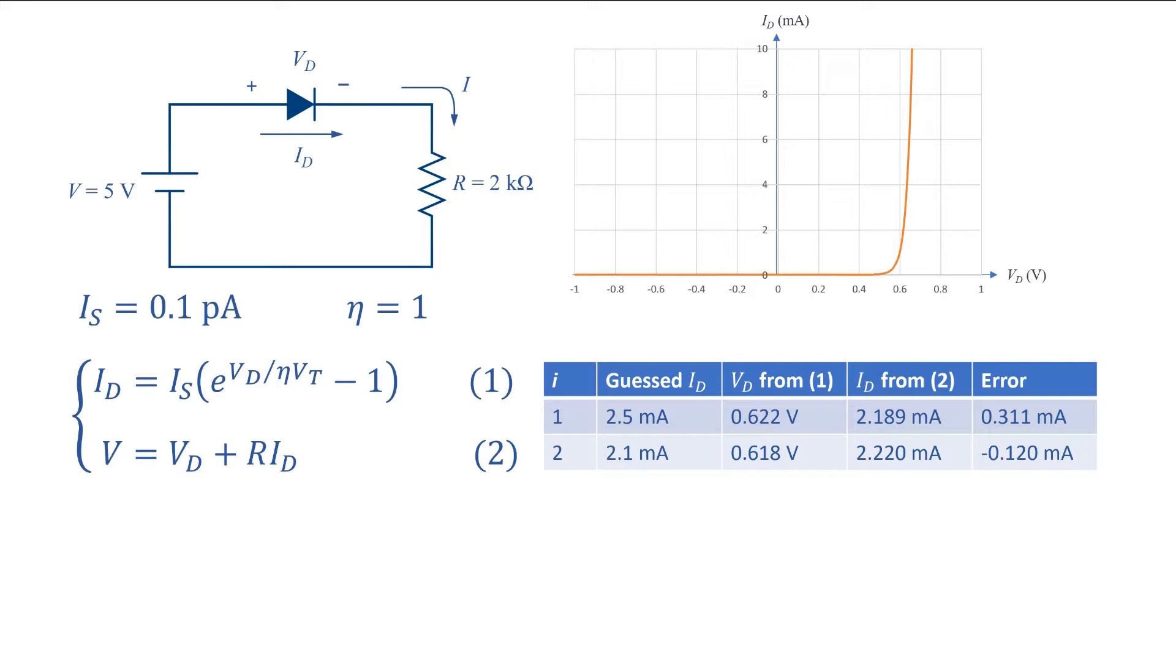There are methods to find the next trial value but I will not go through them and just guess a value for the next iteration, something between 2.1 and 2.2 mA. The error has become smaller.